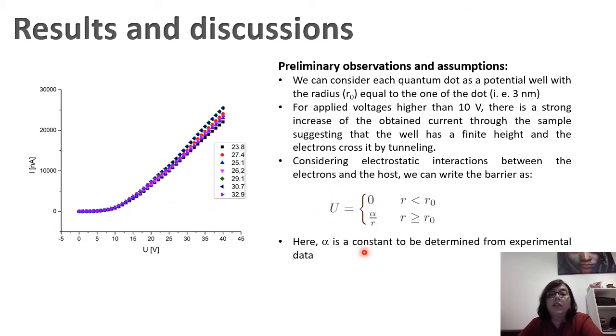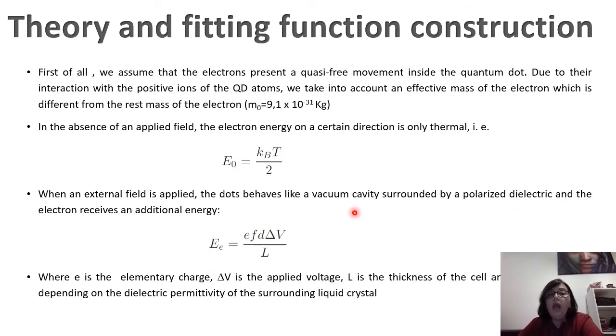So the well has a finite height and the electron can cross the wall of the well by tunneling. Considering the electrostatic interaction between electrons and hosts, we designed the well having this form, where alpha is a constant to be determined from experimental data. In order to find the fitting function, we first consider the energy of the electron when the electric field is not applied on the liquid crystal cell. And in this case, the energy is only thermal, so it can be obtained from the classical formula: E0 = kB T / 2. KB is the Boltzmann constant and T is the temperature expressed in Kelvin degrees.